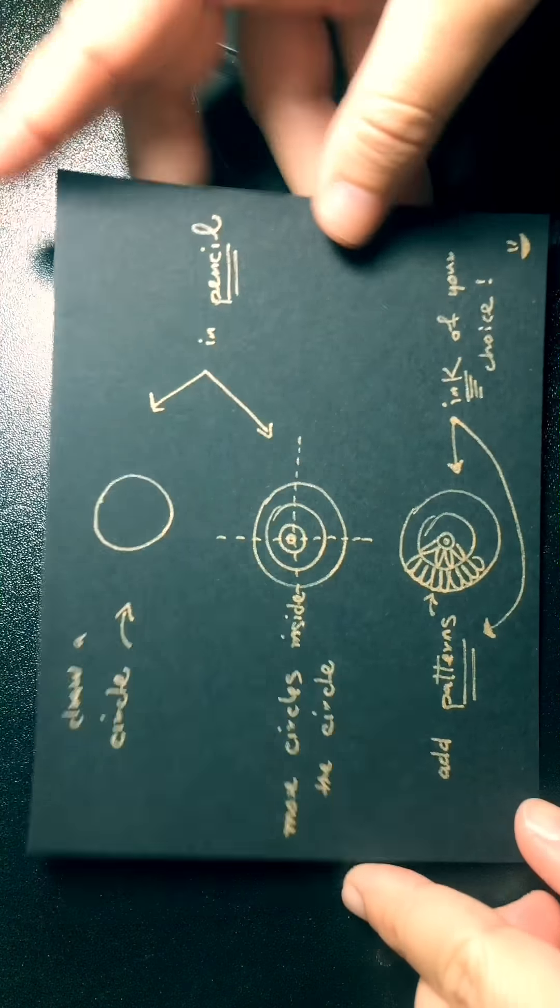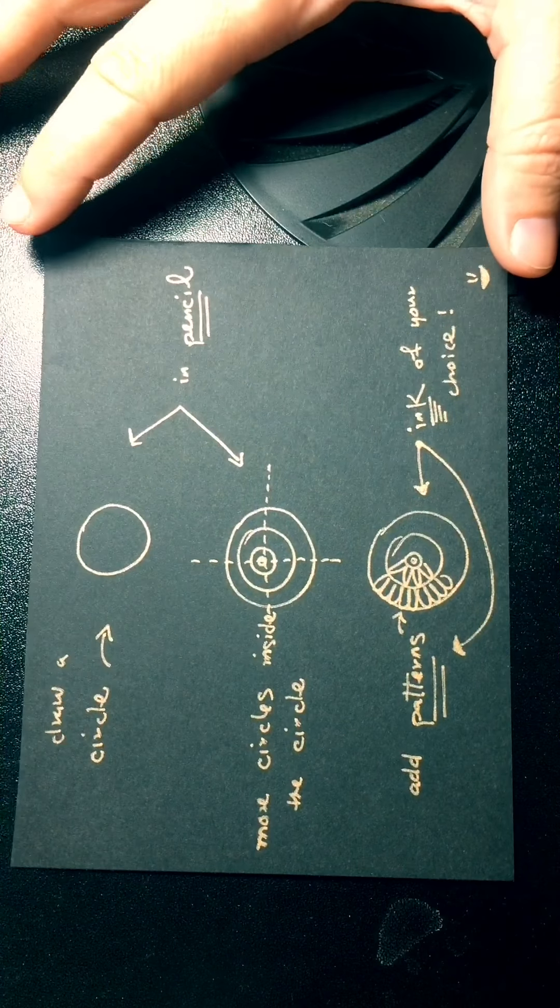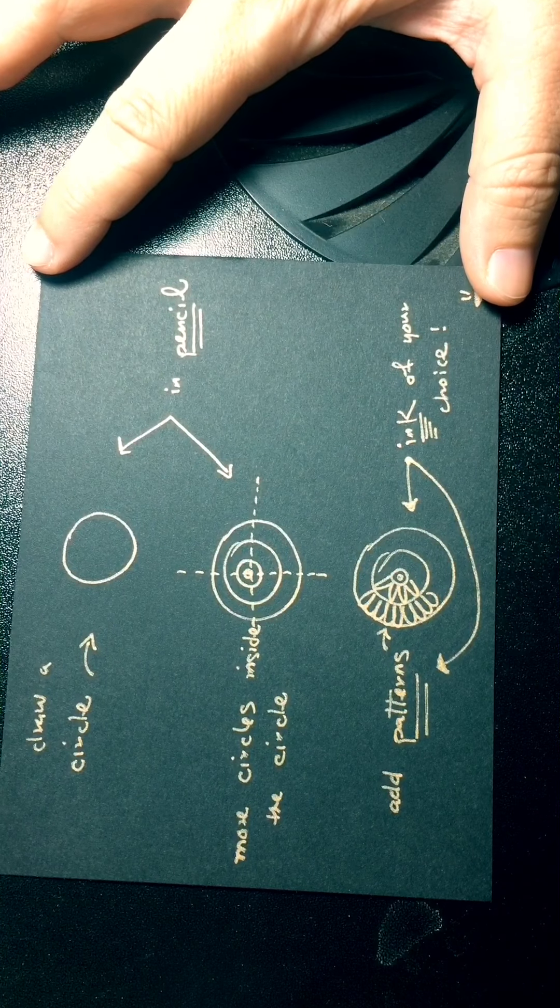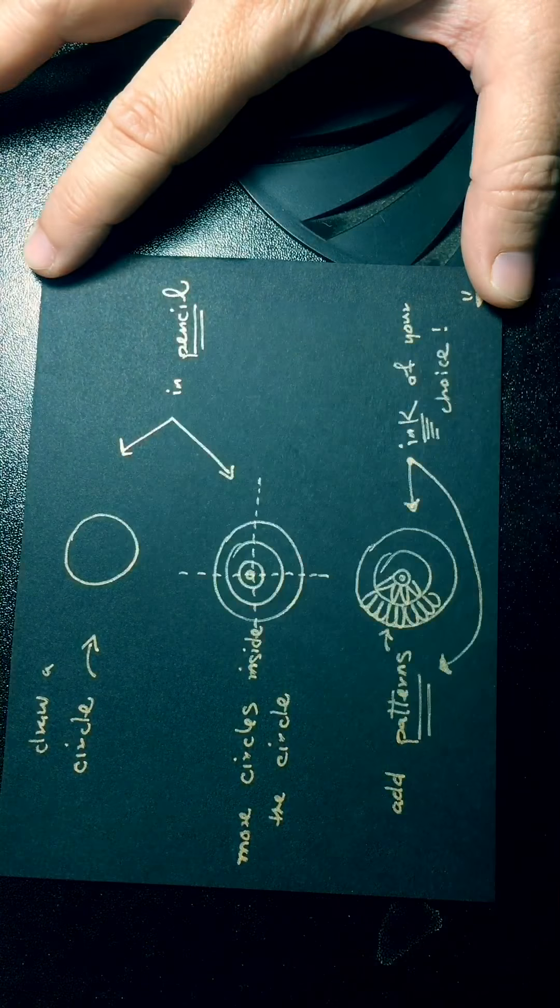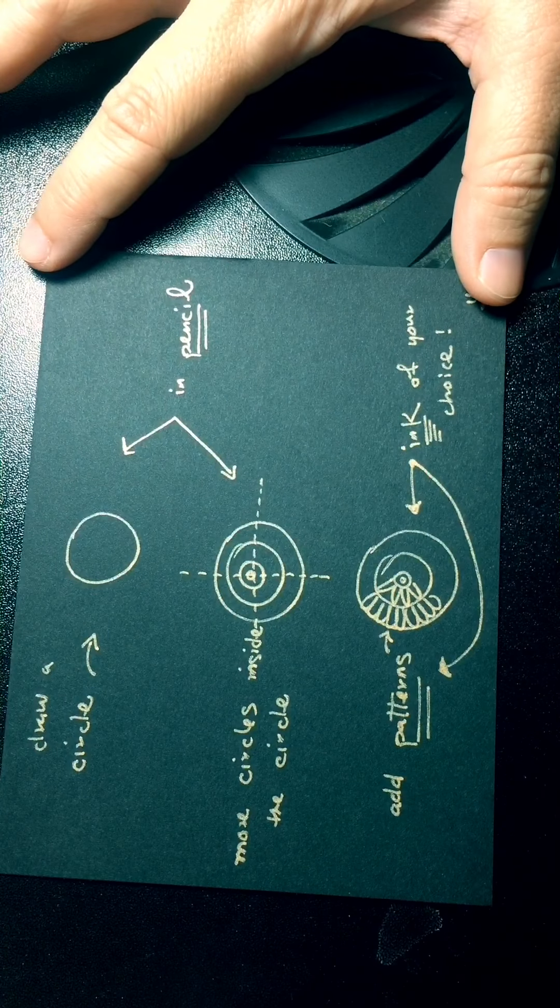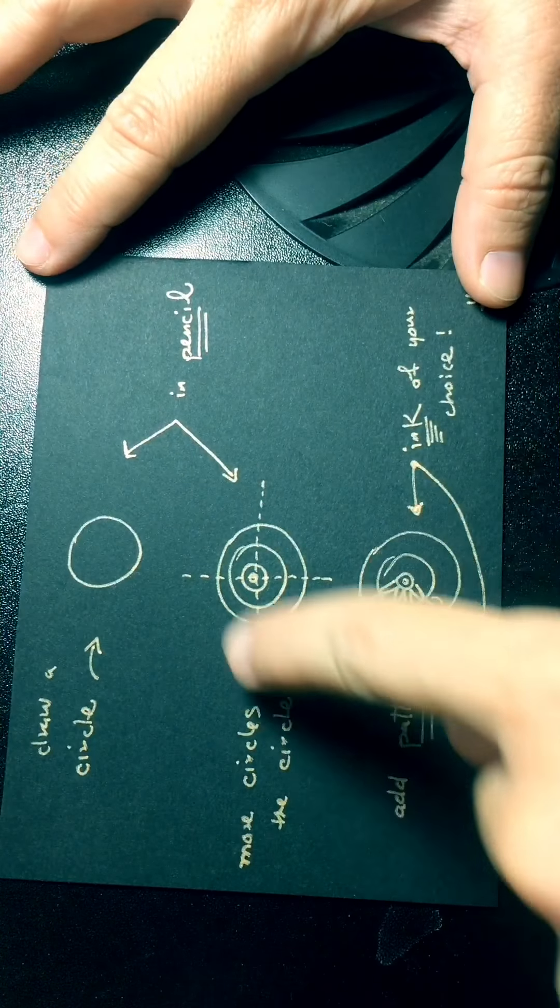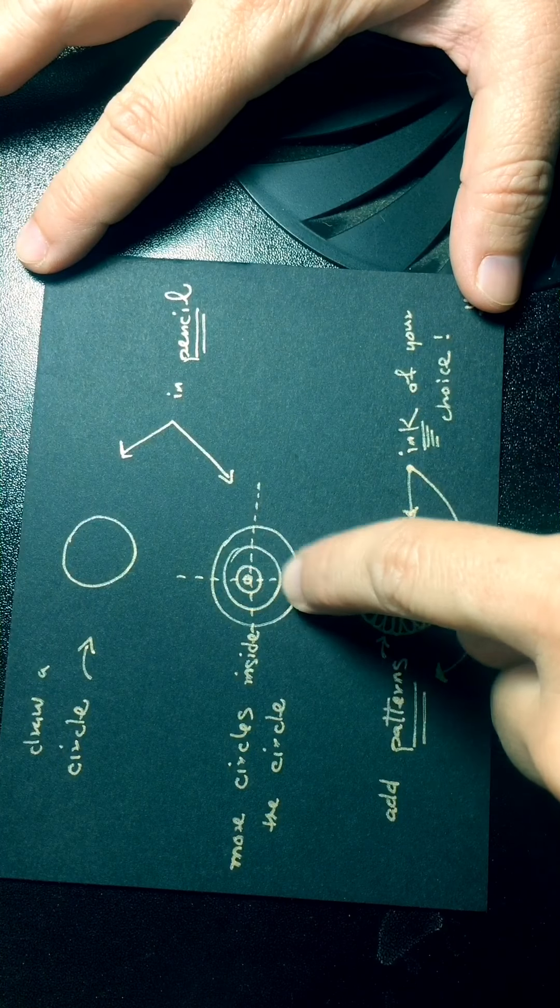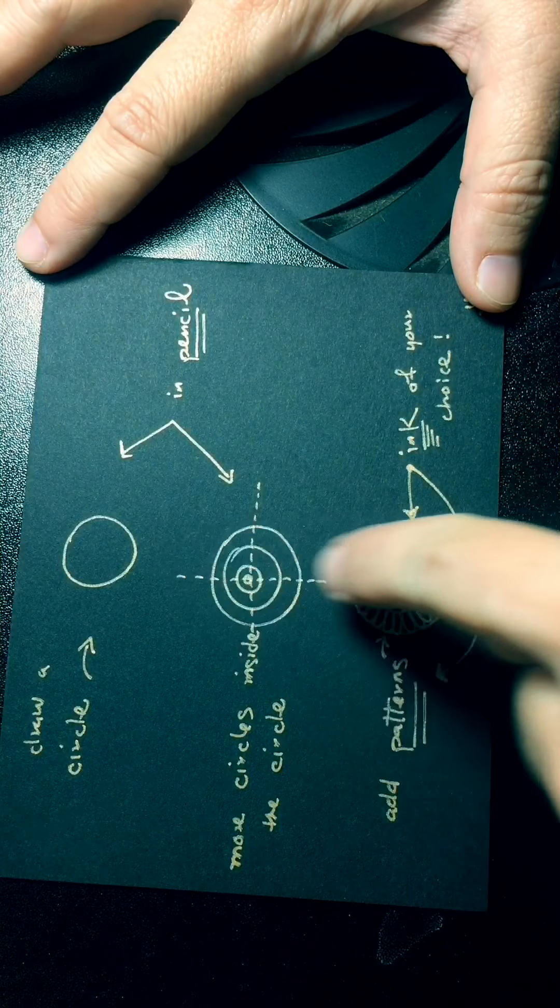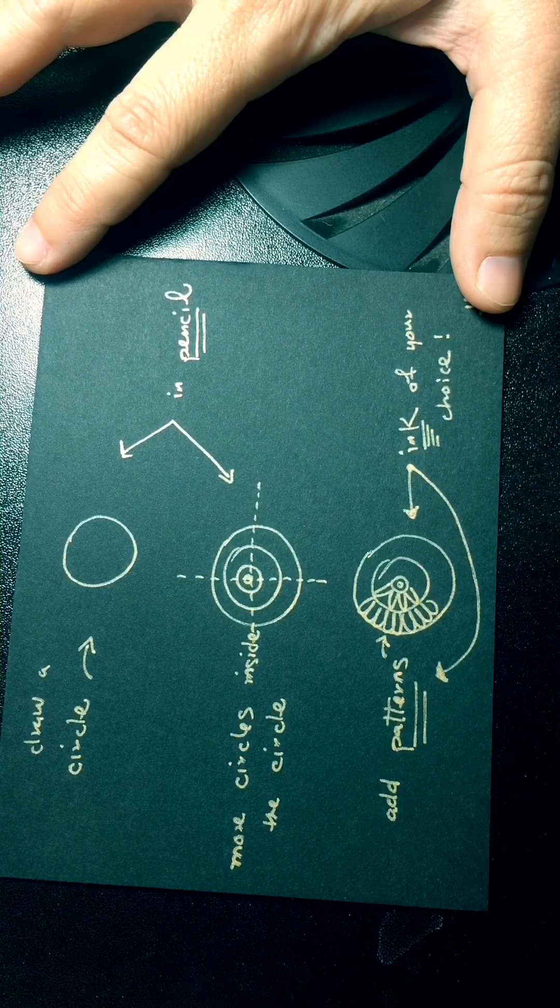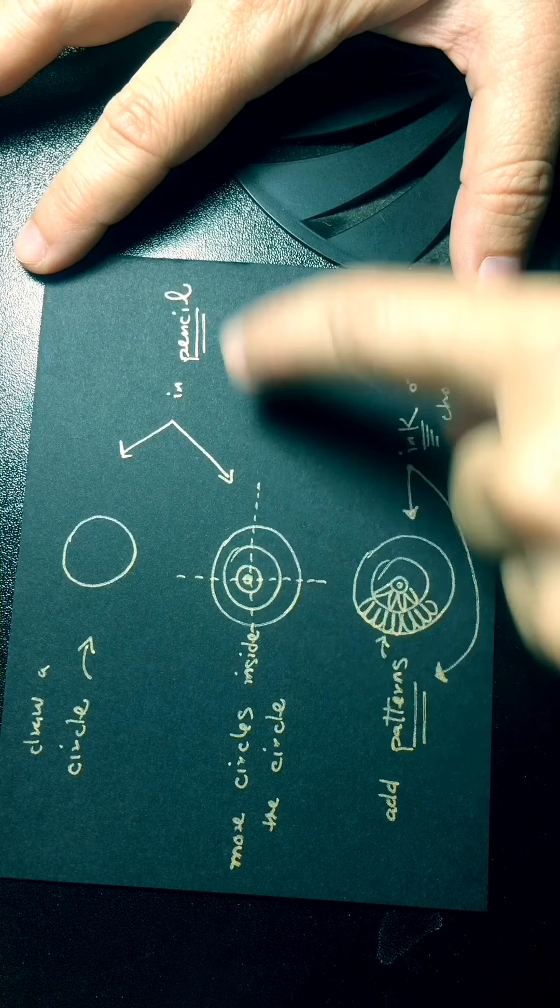Now, here I have a simple guide to making a mandala. What I use is just to simply first draw a circle. These two steps you do in pencil. First a circle, then you draw more circles inside the circle, and you divide it in equal halves, in four equal parts, using the pencil.